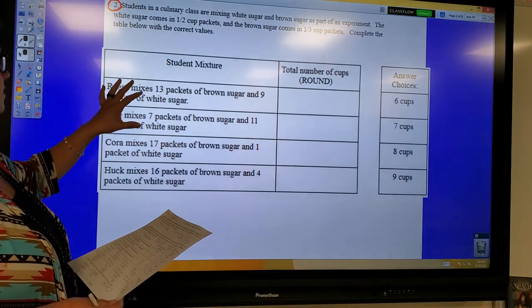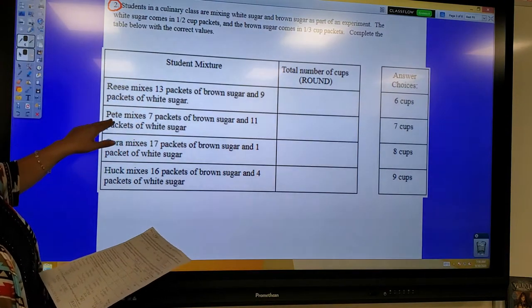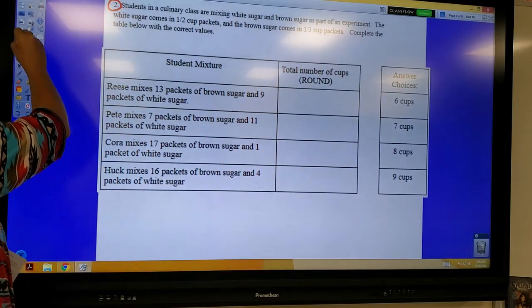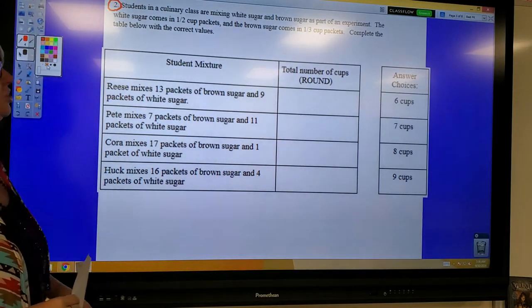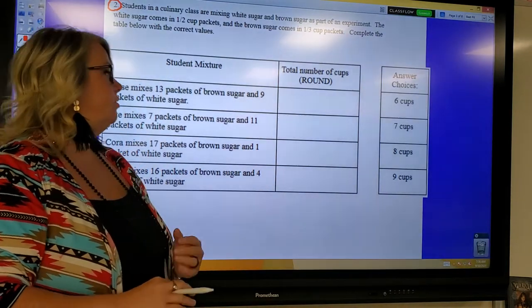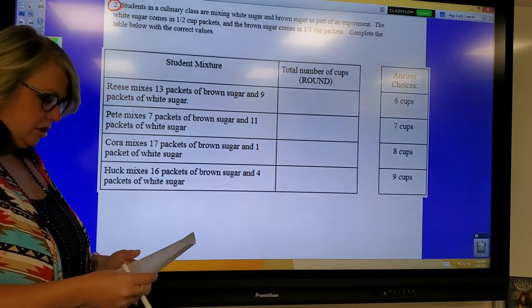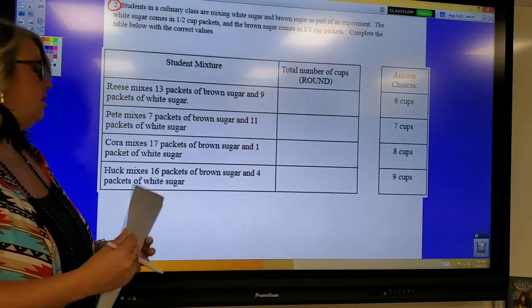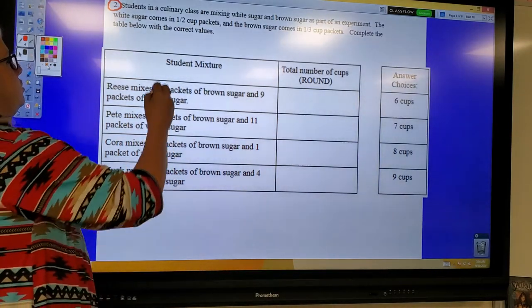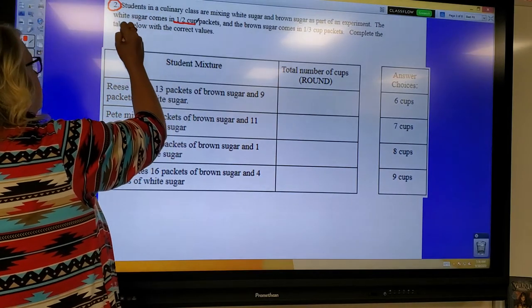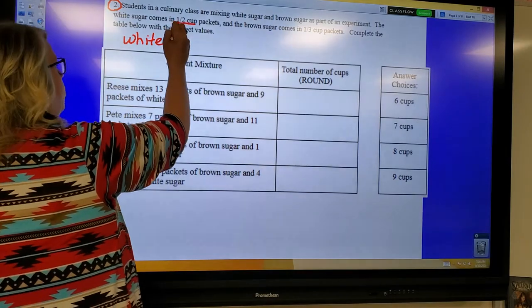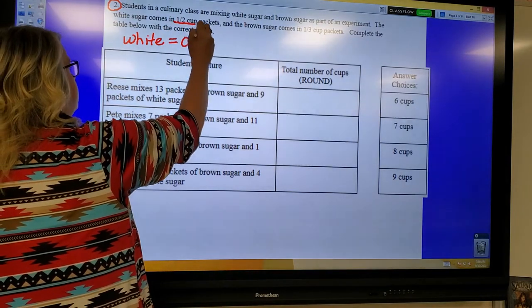Okay, so I'm going to focus on one person at a time. We see we have Reese, Pete, Cora, and Huck. And then we have some answer choices over there. Now your answer choices, you're only going to use each answer choice one time. And we are going to be rounding, and we can see that those answer choices are pretty close to each other. All right, so one thing that you can do if you want to, you can change these into decimal form. So white sugar is a half a cup, and one-half is easy to write as a decimal, it'd be 0.5.